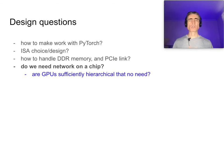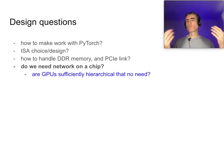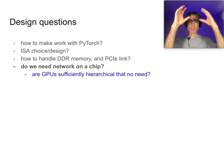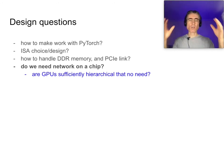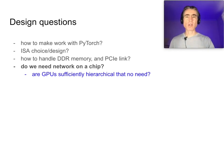Do we need a network on a chip? I'm reliably informed that yes we do. However, I'm not sure — I feel the GPU is sufficiently hierarchical that maybe we don't need one. All of the cores sit in a compute unit, the compute unit communicates with units above that. So I'm not sure we need a network on a chip. I'll find out.